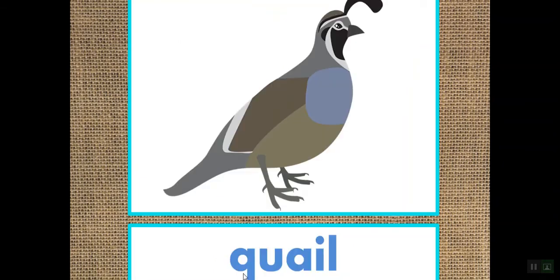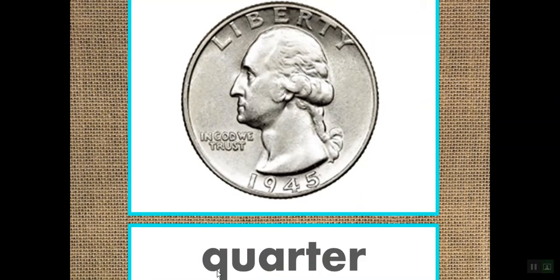Here's quail. Quail starts with quah and Q, U. You're going to see the Q and the U with all of these words. Quarter starts with Q and the sound quah.